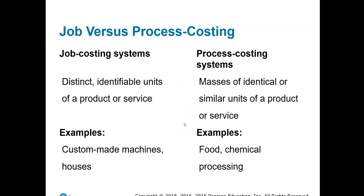In order to understand Process Costing, let's compare it to Job Costing, which we did in Chapter 4. In Job Costing systems, we're making distinct identifiable units of a product or service — it can be one unit or a group of units, but each job is distinguished and consumes a different amount of resources. Examples include custom-made machines, houses, and boats. Process Costing, by contrast, is mass production.